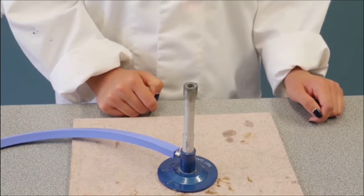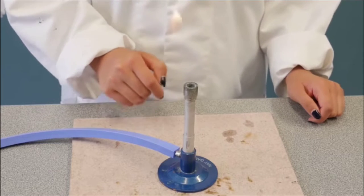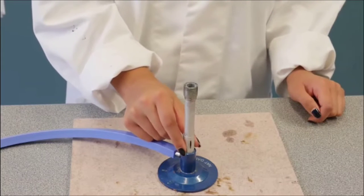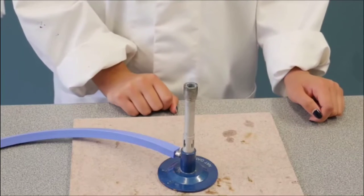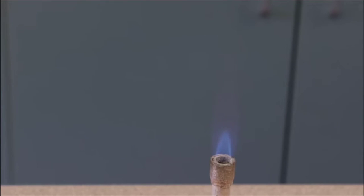To get a hotter flame, we need to mix in more air. To do this, turn the collar to open the air hole. You will now have a blue flame with a bright blue inner core. The hottest part of the blue flame is here, at the tip of the cone.